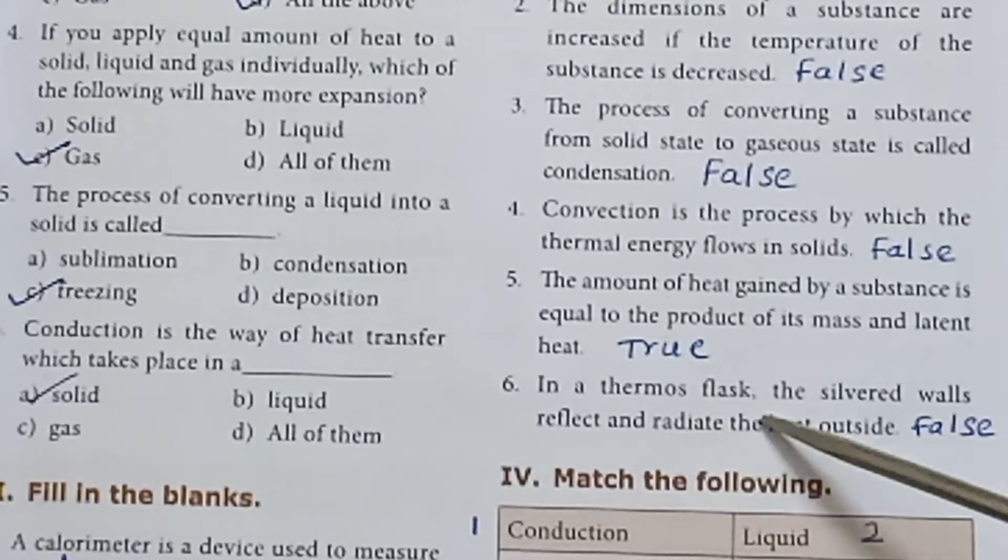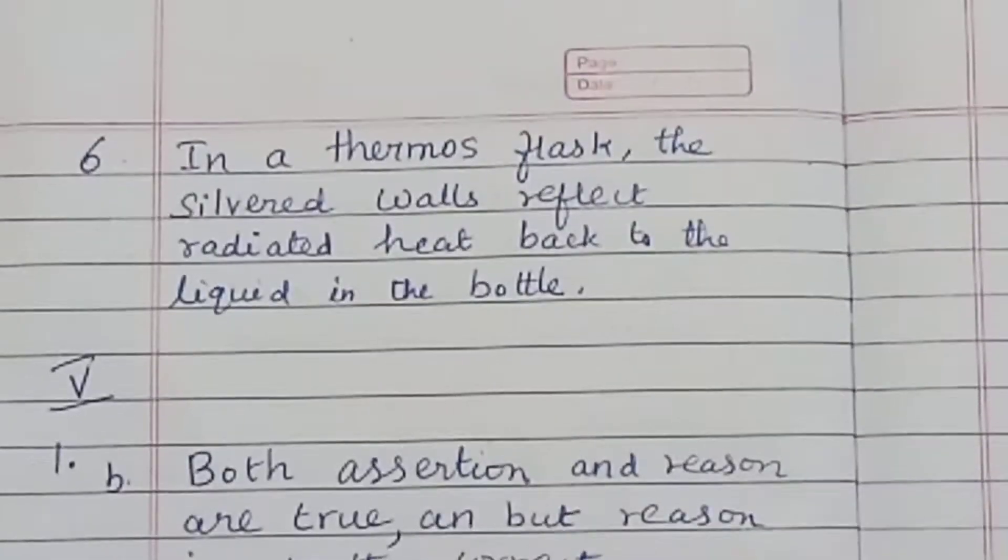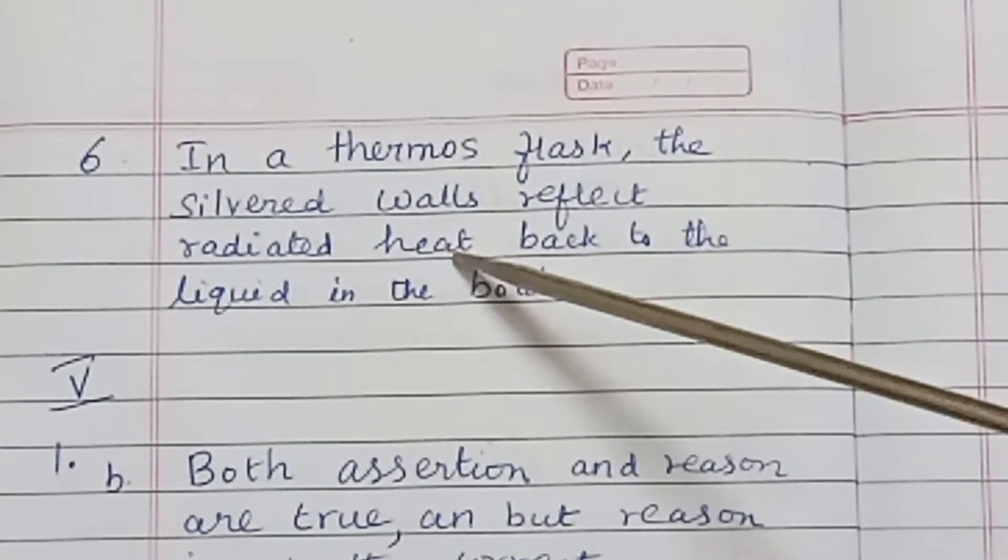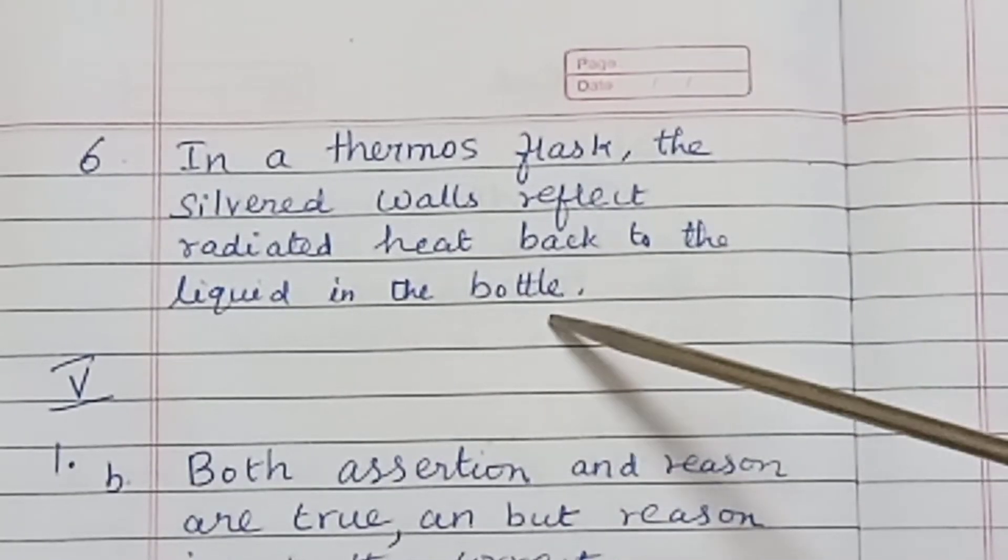Sixth one: In a thermos flask, the silvered walls reflect and radiate the heat outside. False. Sixth one: In a thermos flask, the silvered walls reflect radiated heat back to the liquid in the bottle.